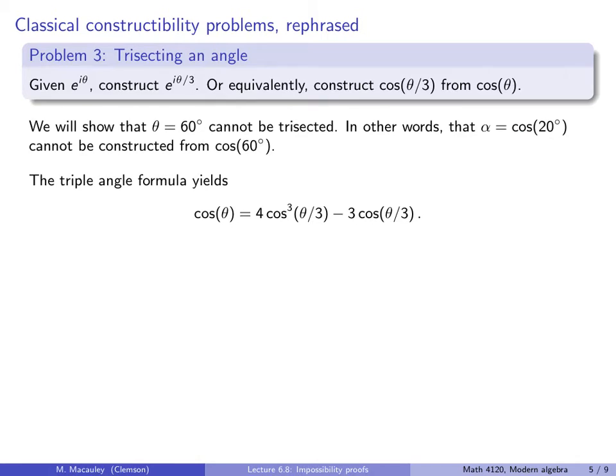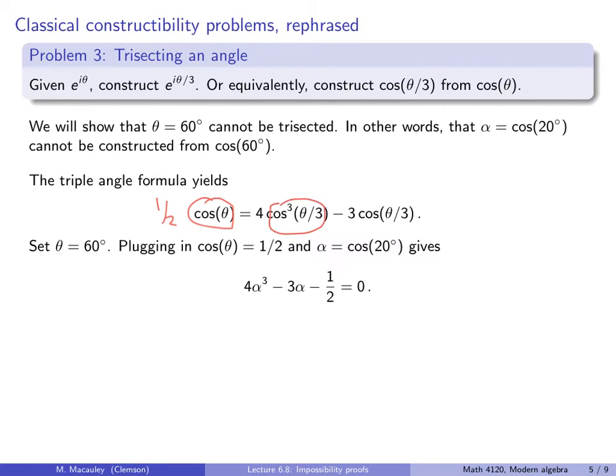Now, there is a triple angle formula, which none of us probably know off the top of our head, and that's fine. But it says that the cosine of theta equals 4 cosine cubed of theta over 3, minus 3 cosine of theta over 3. So let's let theta be 60 degrees, and then let's plug that into this formula above. So, the left hand side cosine of theta is just 1 half cosine of 60. Recall that alpha is the cosine of 20, which we claim is non-constructible. So this here becomes alpha cubed, and this becomes alpha, and when we simplify, we get the following simple algebraic equation 4 alpha cubed minus 3 alpha minus 1 half equals 0. So let's solve this for alpha.